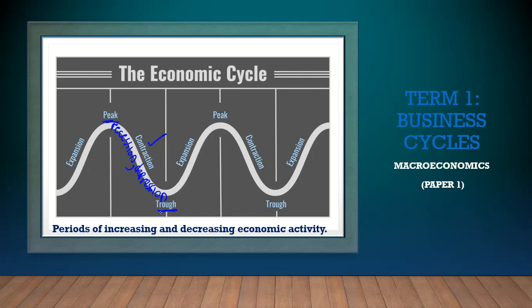Going from the lowest point of the business cycle — the trough — to the highest point, the peak, is an upswing. An upswing is also called an expansion. The expansion also has two parts: first the economy must recover, so we have a recovery phase. Then after the economy has recovered it will prosper, giving us a prosperity phase until you reach the peak. Then the business cycle continues again and again.